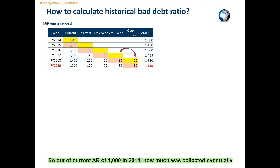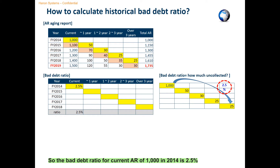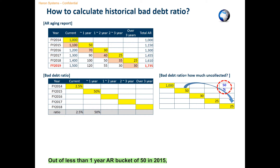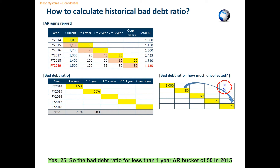So, out of current AR of 1,000 in 2014, how much was uncollected eventually after 3 years? Yes, 25. So the bad debt ratio for current AR of 1,000 in 2014 is 2.5%, which is 25 divided by 1,000. The bad debt ratio for the last-2-years AR bucket of 30 in 2016 is 83%, which is 25 divided by 30. And out of the less-than-1-year AR bucket of 50 in 2015, how much was uncollected eventually after 2 years? Yes, 25. So the bad debt ratio for that bucket is 50%, which is 25 divided by 50.